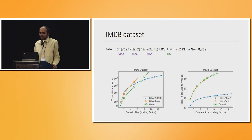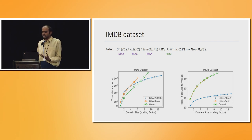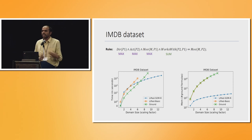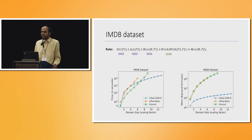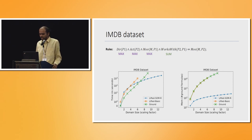For IMDB — about movies, directors, and actors — our approach (blue curve) is better than ground (green) and lifted basic (orange). The orange is slightly worse than green, likely due to lifting overhead. There is some overhead for small domains, but for larger domains we are significantly better.